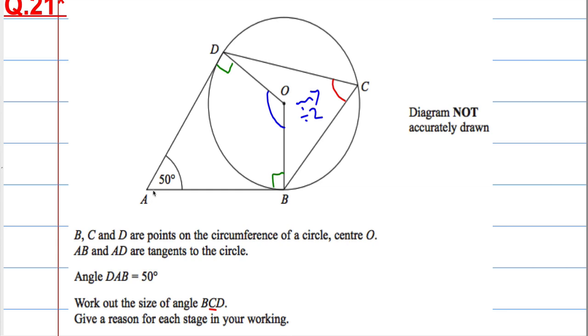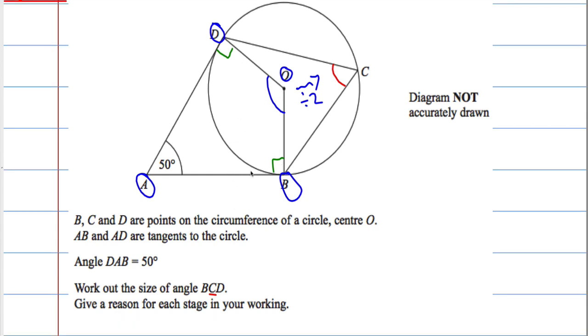And I can also see that this shape here, ABOD, forms a quadrilateral and quadrilaterals have 360 degrees in it. So I should be able to work out the blue angle. So let's write this down.